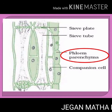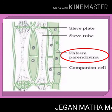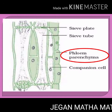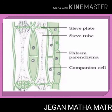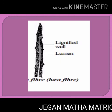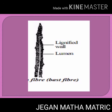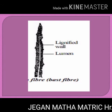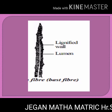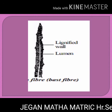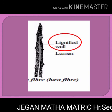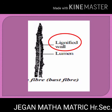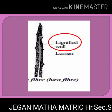Phloem parenchyma are living cells which have cytoplasm and a nucleus. Their function is to store food material. Phloem fibers are sclerenchymatous cells associated with primary and secondary phloem. These cells are elongated, lignified, and provide mechanical strength to the plant body.